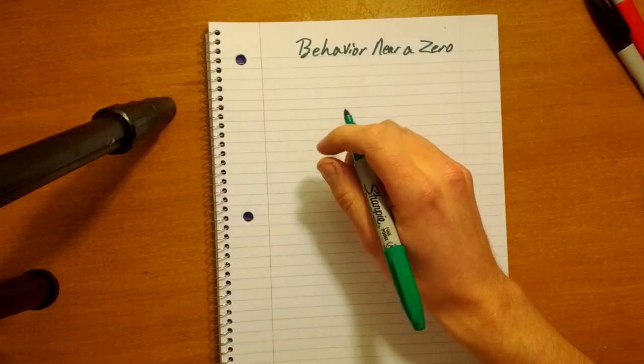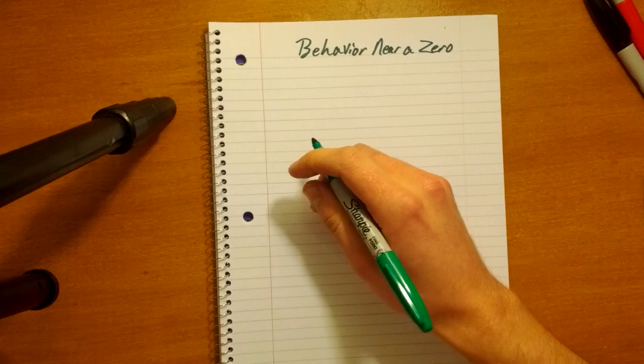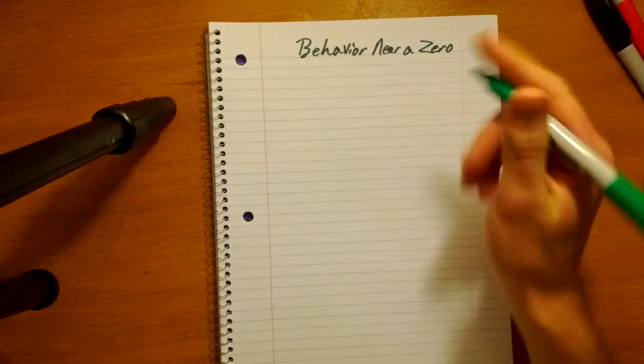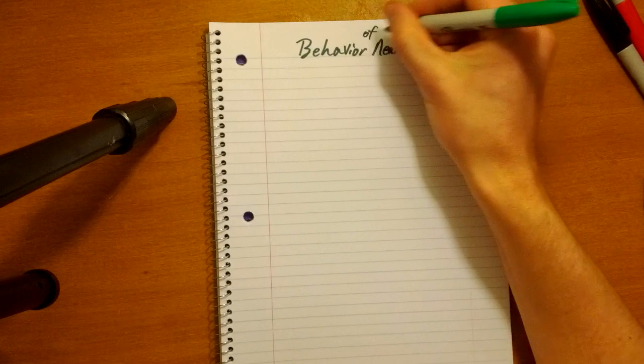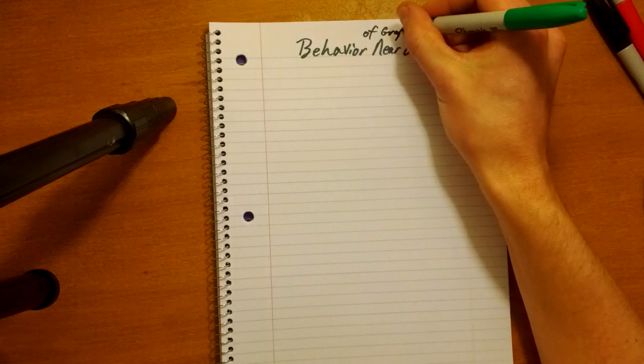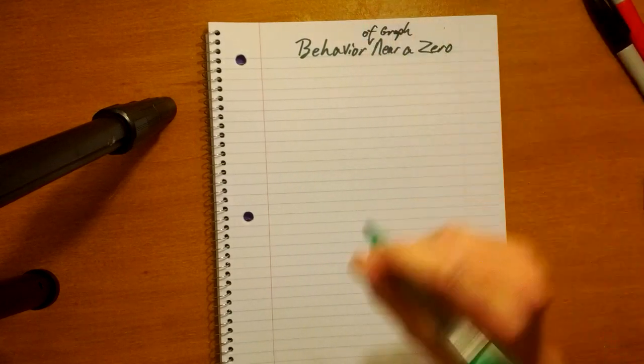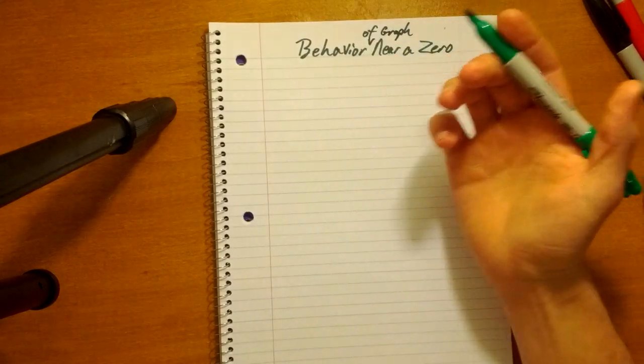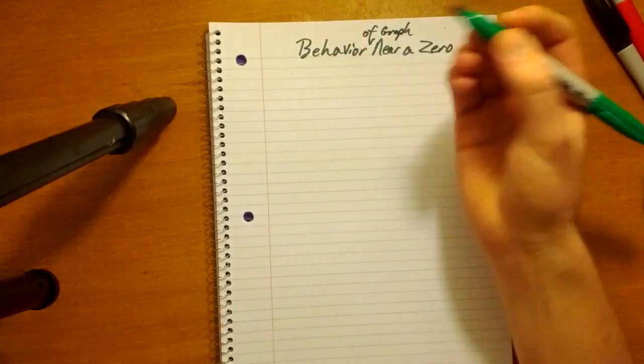In today's lesson we are going to find the behavior of a graph near a zero. Maybe I should say, of a graph, of a graph. That's how you do that, right? This is math, not English.